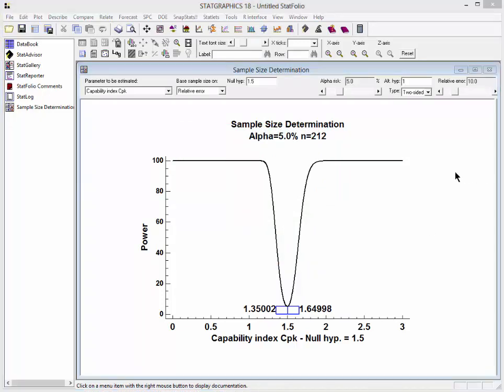I'm now ready to look at the result. At the top of the screen, you can see that it tells me that I will need 212 items randomly sampled from my process in order to estimate CPK to within plus and minus 10% when it's somewhere around 1.5.